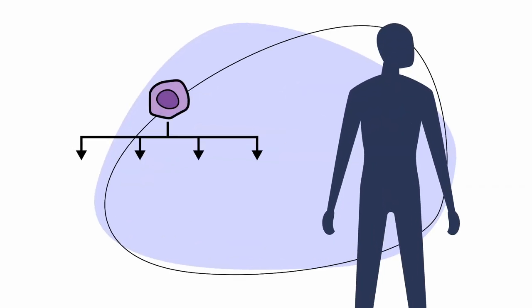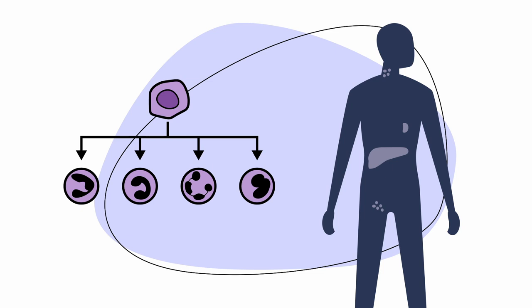PTCL is a non-Hodgkin lymphoma that is divided into many types and subtypes. PTCL is also divided into stages, based on the number of lymph nodes that are affected and their location in the body.